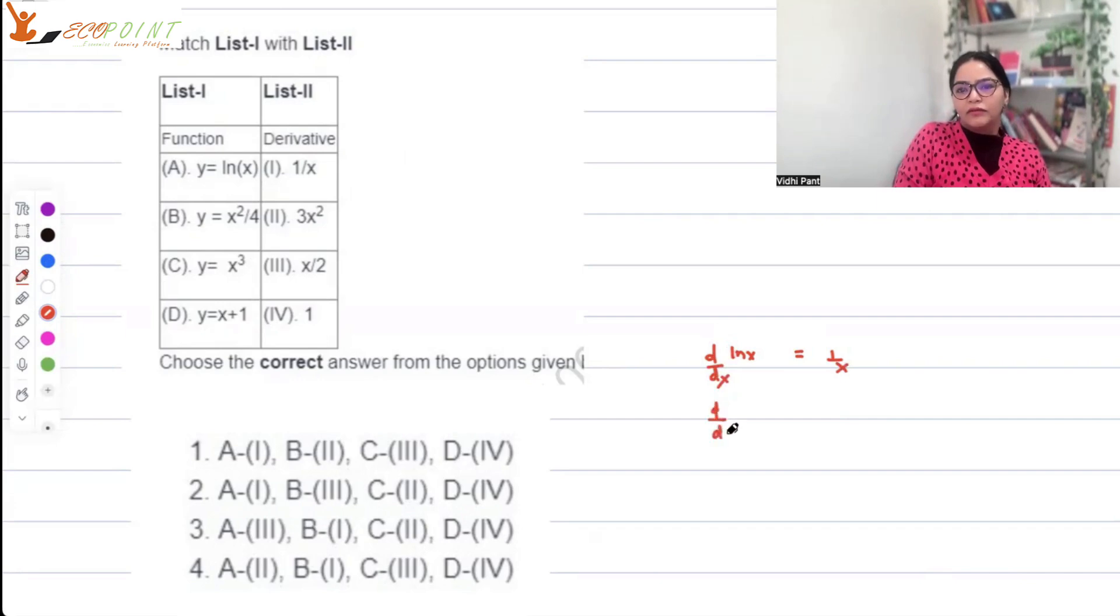Derivative of x² by 4 is 2x by 4, that is x by 2. Derivative of x³ is 3x², and derivative of x + 1 is just 1. So the correct match is, which option? 1, 3, 2, 4, so that's option 2.